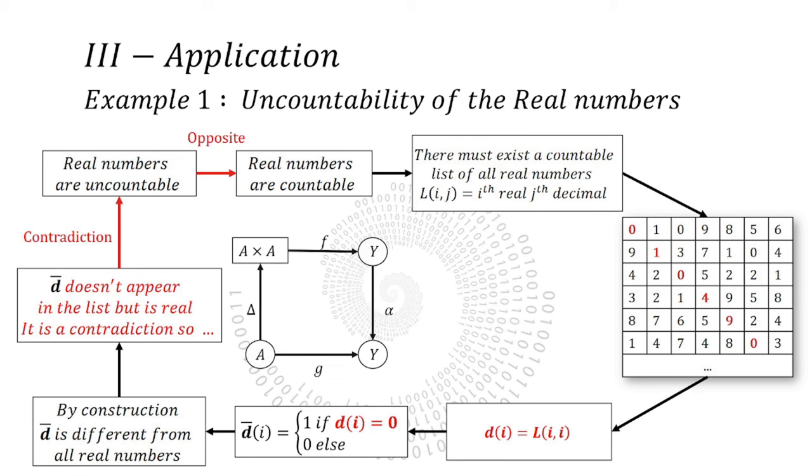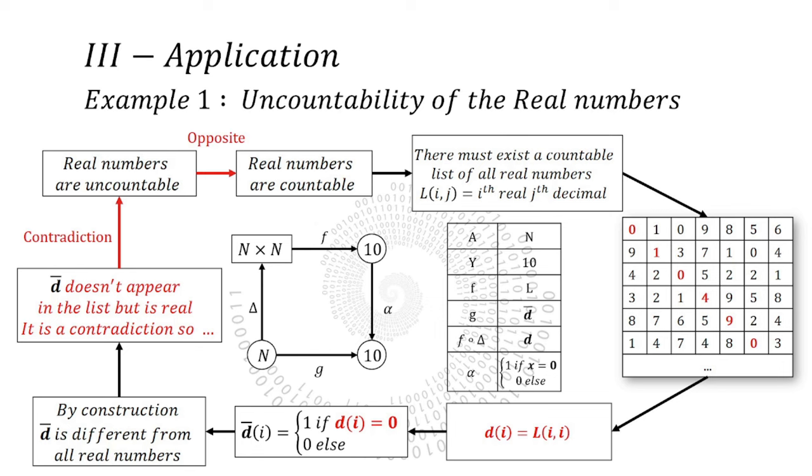So, for the uncountability of real numbers, let's rewrite the diagram of the proof but with the actual sets. And, let's try to understand each function and set equivalents. So, A is the natural numbers. It comes from the assumption that real numbers are countable. Y is a digit from 0 to 9 because we used decimal system to represent real numbers. F is our double indexed list L, a function that is supposed to be surjective. G is counter-D, a counter-example that F will never reach.